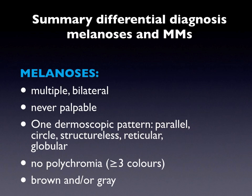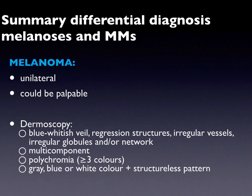In summary, the differences between melanosis and melanoma are as follows. Melanosis are mainly multiple lesions, often bilateral, never palpable, and are mainly characterized by one dermoscopic pattern — parallel, circle, structural, reticular, or globular. They are not polychromic and are characterized by a brown or gray color. Melanoma is usually a solitary and unilateral lesion, could be palpable. Under dermoscopy, it is characterized by the criteria of cutaneous melanoma, but can also show a multi-component pattern and polychromia. The presence of gray, blue, or white structureless areas is a clue for the diagnosis of melanoma.